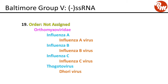Order not assigned, family Orthomyxoviridae. Genus influenza A includes influenza A virus; influenza B includes influenza B virus; influenza C includes influenza C virus; and thogotovirus includes the Dhori virus.